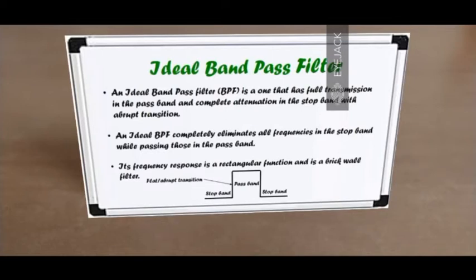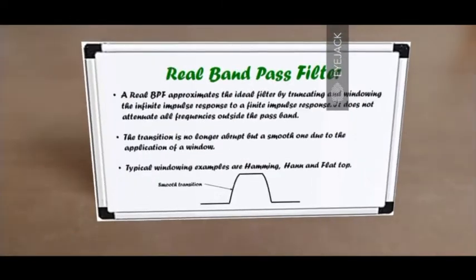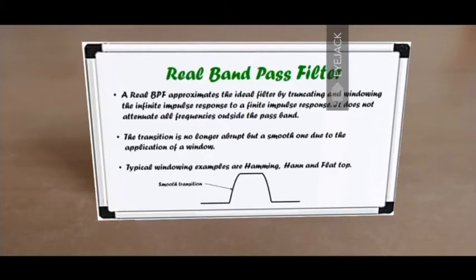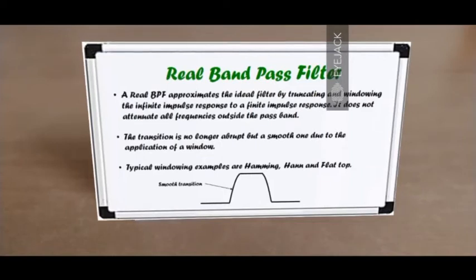Now let's look at a more realistic filter — a real bandpass filter. A real bandpass filter approximates the ideal one by truncating and windowing the infinite impulse response to a finite one. However, there is a slight limitation: it doesn't attenuate all frequencies in the stop band. The transition is no longer abrupt — unlike the ideal filter, it's not a brick wall transition but rather a smooth one due to the application of a window. Typical window examples are Hamming, Hann, flat-top, and many more. There is a smooth transition between the stop band and pass band, which leads to a limitation.